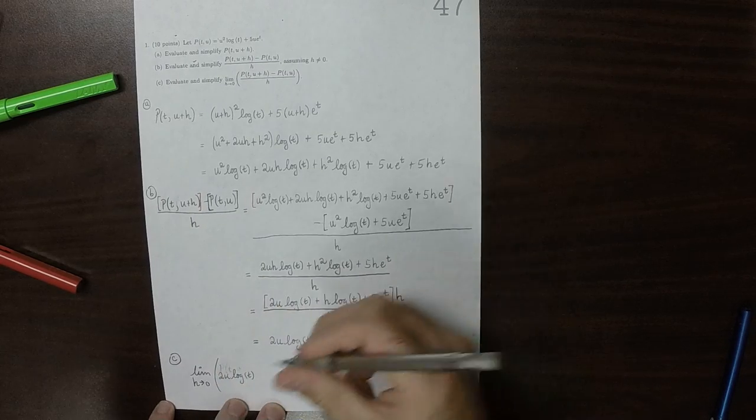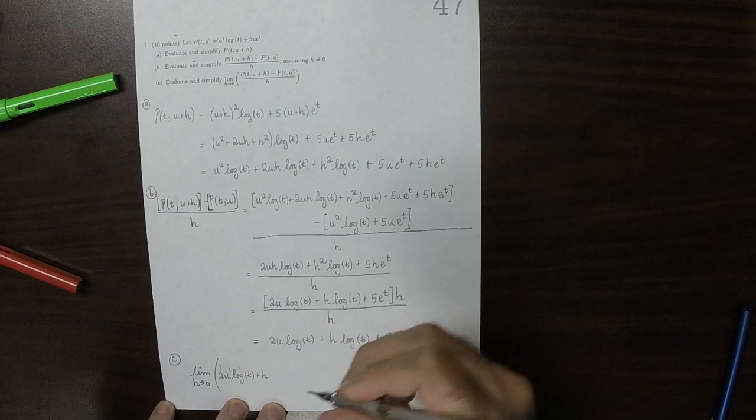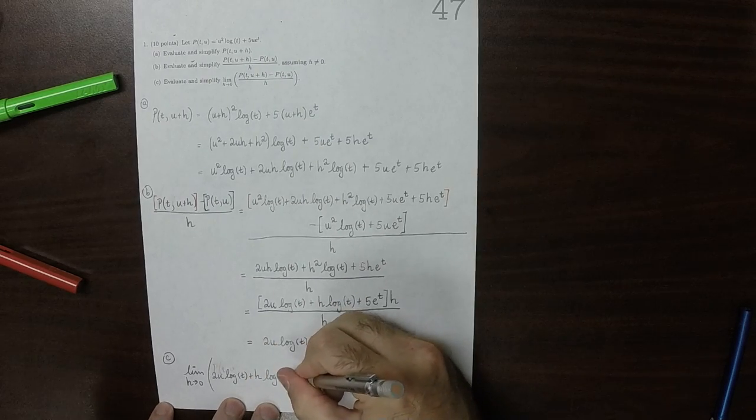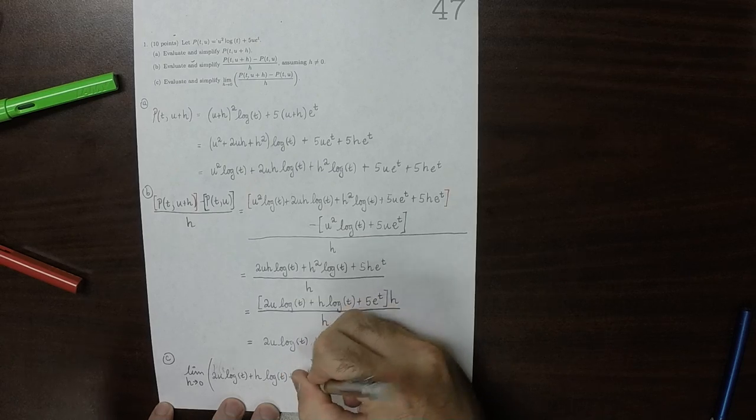2u log t plus h log t plus 5 exponential t.